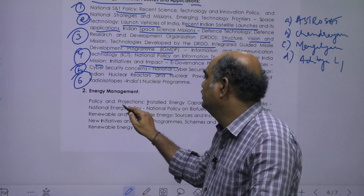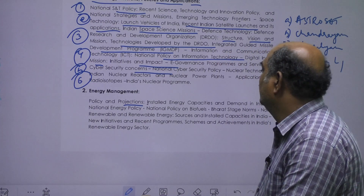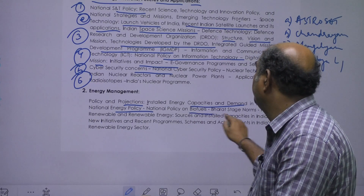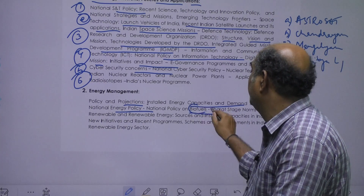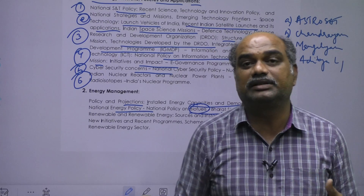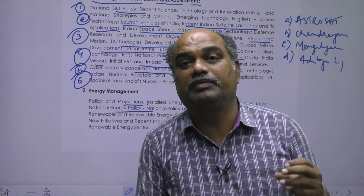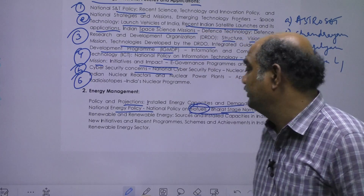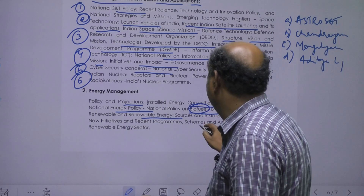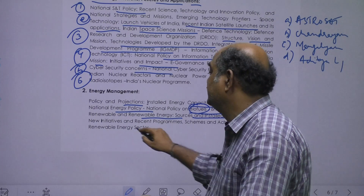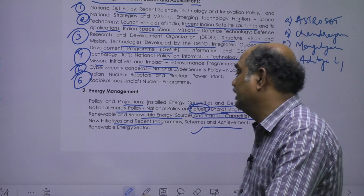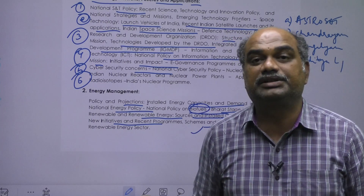Energy management covers policy and projections, installed energy capacities and demand in India, national energy policy, and national policy on biofields — biofields are very important. Bharat Stage norms BS4 and BS6 are main applications. Non-renewable and renewable energy sources, installed capacities in India, new initiatives and recent programs, schemes and achievements of the renewable energy sector in India are all covered.